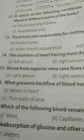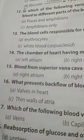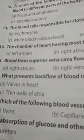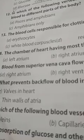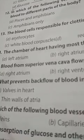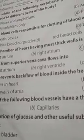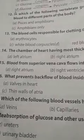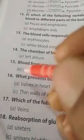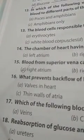Question number 15: blood from the superior vena cava — which collects blood from different parts of the body — flows into the right atrium. The answer is A, that is the right atrium.